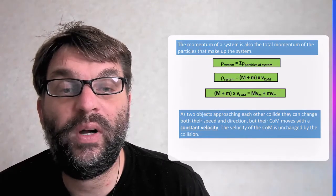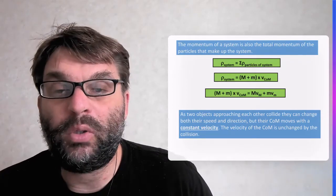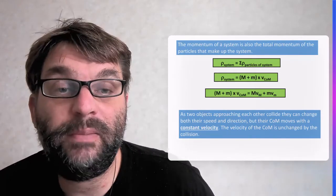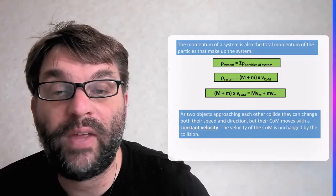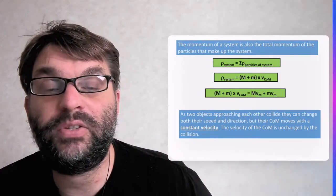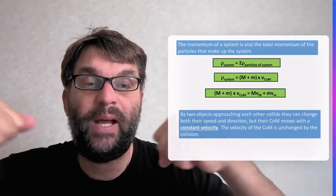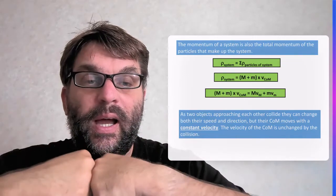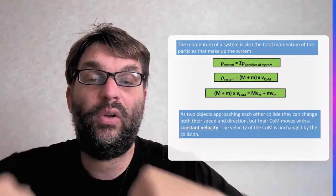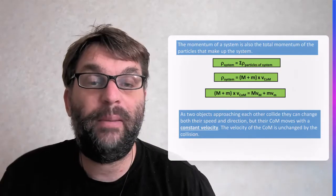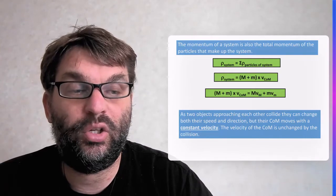Therefore, if you rearrange it, you can see that the sum of those two masses multiplied by the velocity of that centre of mass will equal the mass of the velocity of that big mass plus the mass of the velocity of the small mass. So if you've got two objects and they're about to collide with each other, then it can change the speed and direction of the other object. But the velocity of the centre of mass is unchanged by the collision.